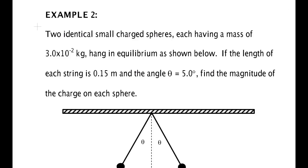In this example we're going to do a problem involving Coulomb's Law. We have two identical small charged spheres each having a mass of 3×10⁻² kilograms, and they hang in equilibrium as shown below. If the length of each string is 0.15 meters and the angle is 5 degrees, find the magnitude of the charge on each sphere.